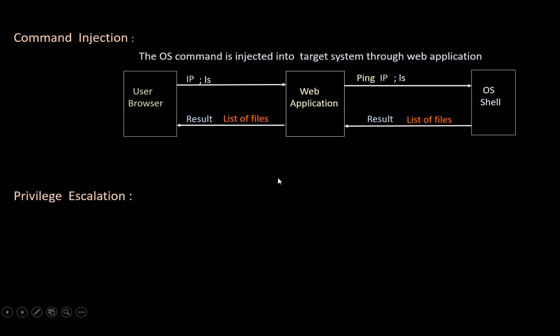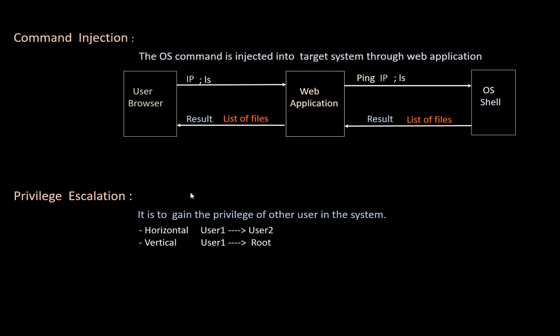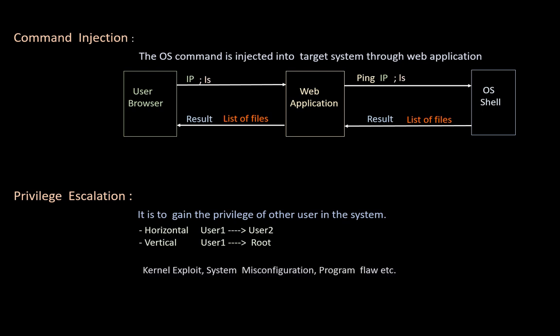Next, privilege escalation. Once the user gets access into the system, they try to get access of other users. It can be done in two ways: horizontal and vertical. In horizontal escalation, user 1 tries to get the access of user 2 to access their data. In vertical escalation, user 1 tries to get higher privilege access — like root. This is possible using different techniques: kernel exploitation, system misconfiguration like SUID bit set on certain files, or program flaws like using MySQL to add a normal user to an admin group.